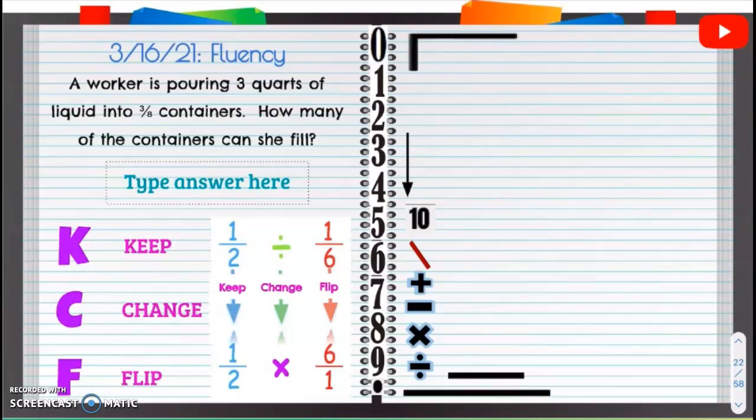So when we do this keep, change, flip, we're going to take a look and first of all, start off with three, and then we're going to divide it into three-eighths. Now when we're dividing, we're going to figure out how many containers she can fill. So we're going to divide three divided by three-eighths.